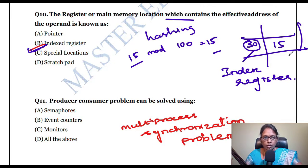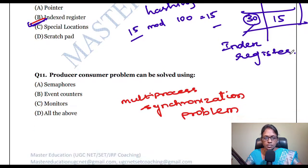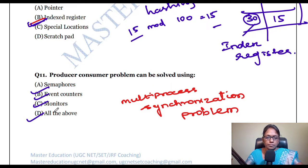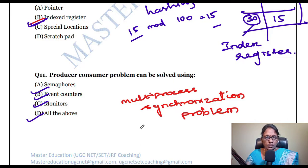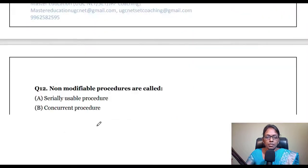Next: the producer-consumer problem. It involves one person using a resource while others wait. The producer provides resources and the consumer uses them. The producer-consumer problem can be solved using semaphores, event counters, and monitors — all of the above are the answers.